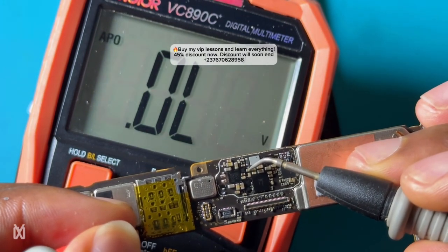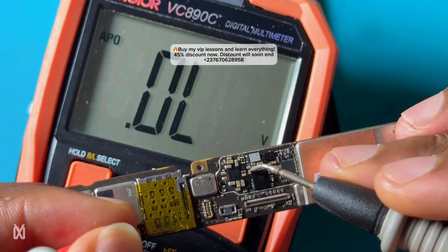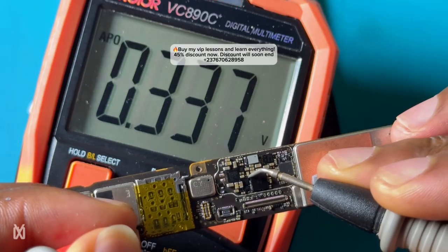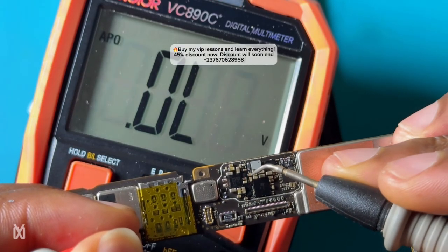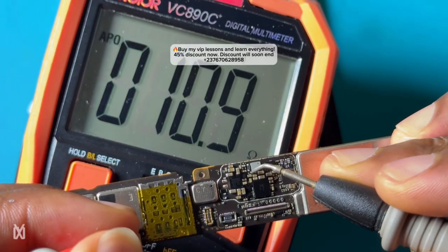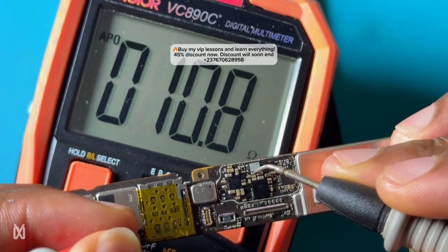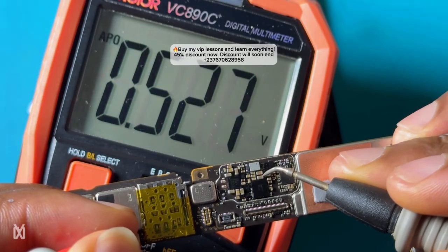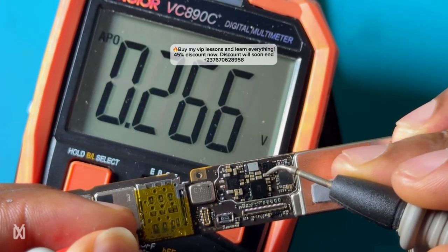Again, I'm still testing that short. It was supposed to be giving a reading of 0.00 or 0.01 or 0.02, but the battery of my multimeter is actually low, that's why it's giving 0.10.